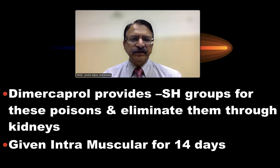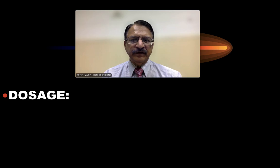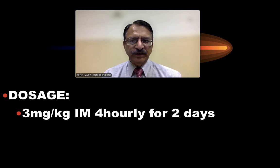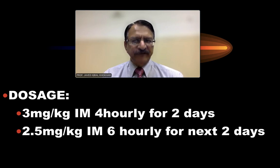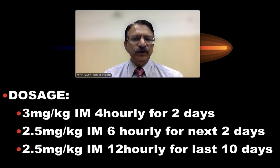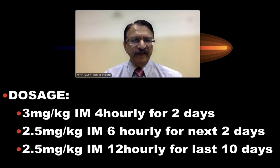BAL is given intramuscularly for 14 days. The dosage is 3 mg per kg intramuscular 4-hourly for 2 days, then 2.5 mg per kg intramuscular 6-hourly for the next 2 days, and 2.5 mg per kg intramuscular 12-hourly for the last 10 days — so total 14 days is the treatment duration.